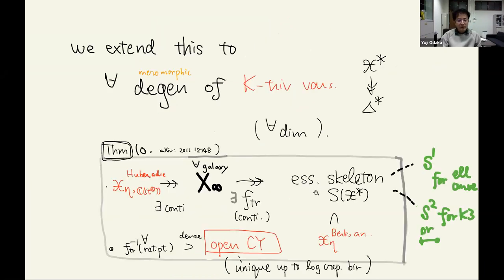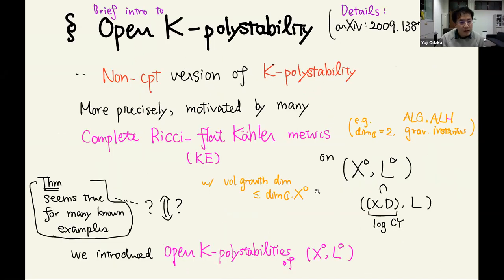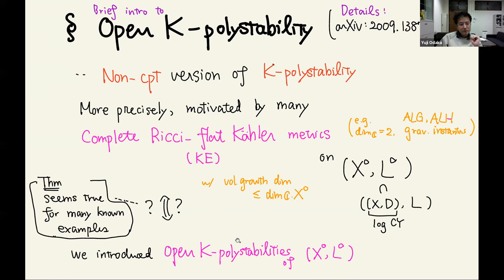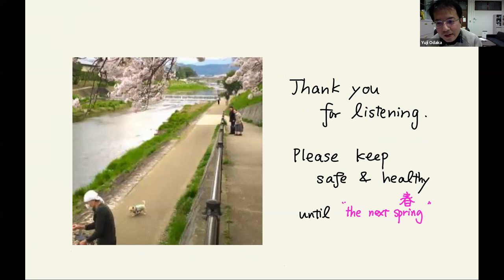So this is the theorem. Finally, none of the paper discussed a non-compact version of K-polystability. In the Calabi-Yau open case, for open Calabi-Yau, sometimes we have a complete Ricci-flat Kähler metric and sometimes it is unknown. I introduced some open K-polystability notions and checked many examples matched to this notion. I finished the talk here. Thank you for listening. Keep safe during this difficult time.